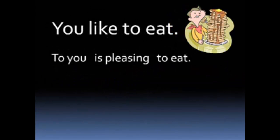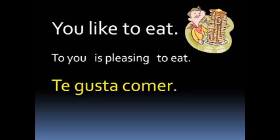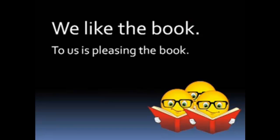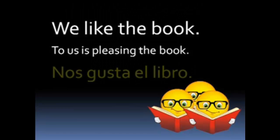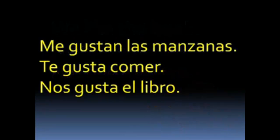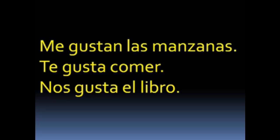Another example: 'You like to eat.' The structure is 'to you is pleasing to eat' — te gusta comer. 'To eat' (comer) is pleasing (gusta) to you (te). And 'We like the book' — the book is what's doing the pleasing, so: 'to us is pleasing the book' — nos gusta el libro. El libro is the subject, conjugated as gusta. So our three examples: me gustan las manzanas, te gusta comer, nos gusta el libro.